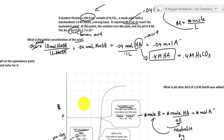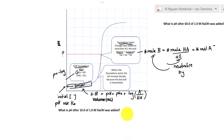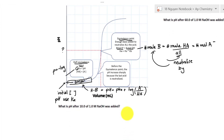Now let's look at the buffer region on the graph. What happens to the pH when we add 10 mL of base — before reaching the half-equivalent or equivalent point? If we add base, the pH is going to go up. Let's see how we solve this. First, we need to write the equation. The reaction can be written with OH⁻, and we don't care about water — we only care about the conjugate acid-base pair.